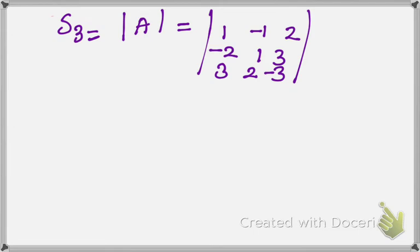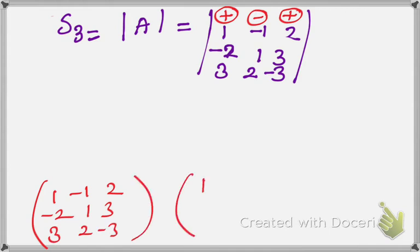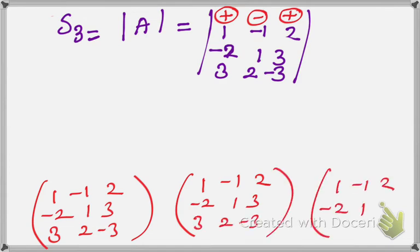First, assign signs to the first row: the first term has plus sign, second term minus sign, third term plus sign — signs are always alternating. We consider only the first row values. In rough work, write the matrix three times to find the cofactors.